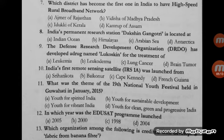Question number 8: India's permanent research station Dakshin Gangotri is located at — Indian Ocean, Himalayas, Arabian Sea, or Antarctica? The correct option is D, Antarctica. Dakshin Gangotri was the first scientific base station of India situated in Antarctica as part of the Indian Antarctic Program. It is located at a distance of 2,500 km from the south pole of the earth.